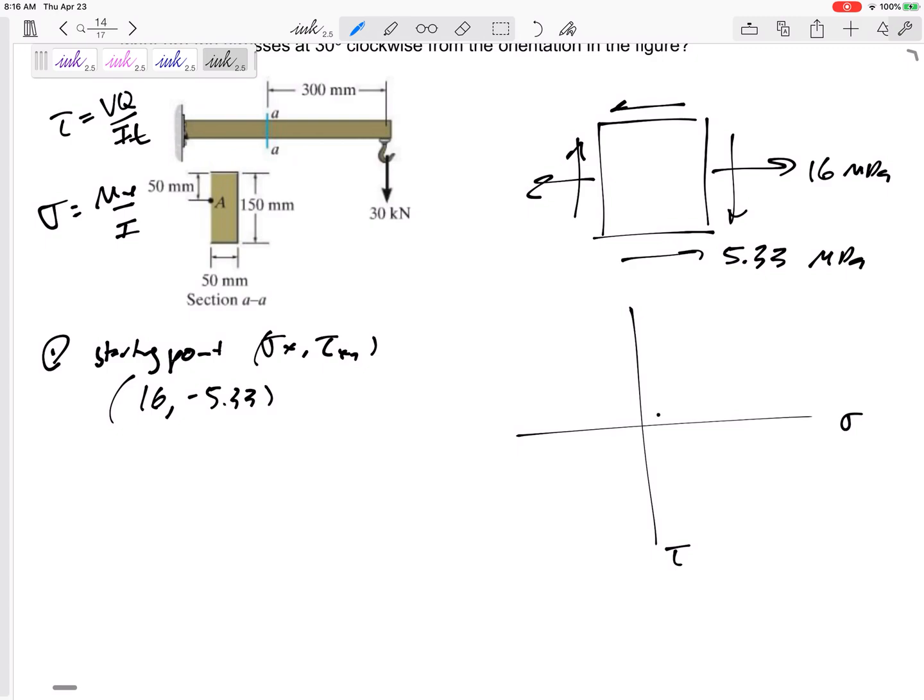This would be 16 comma negative 5.33. So maybe we do 2, 4, 6, 8, 10, 12, 13, 16, and then 1, 2, 4, 6, 8. So this would be about right there, right? 16 comma 5.33.